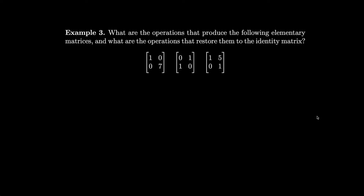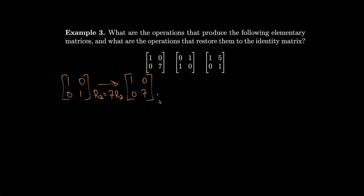Now, what are the operations that produce the following elementary matrices, and what operations restore them to the identity? For the first one, start with the 2-by-2 identity and multiply row 2 by 7, giving 1, 0, 0, 7. To restore it, divide row 2 by 7 — multiply by 1/7 — and we get the identity back.